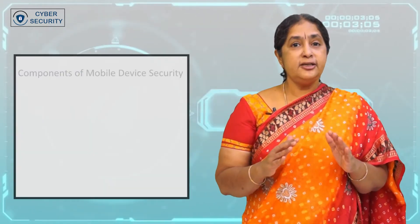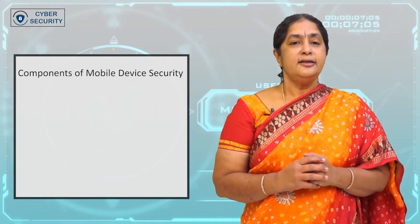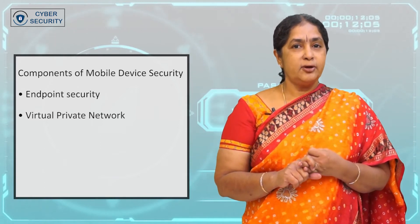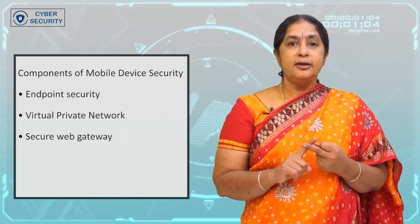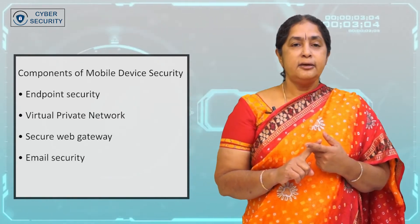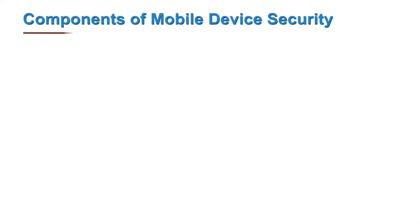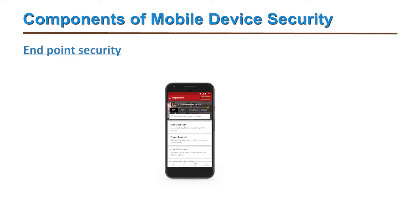Let us see the important components of mobile device security. Generally there are five components: endpoint security, virtual private network (VPN), secure web gateway, email security, and cloud access security broker. We will see them one after the other. Endpoint security monitors the processes and files in a mobile device during network access.